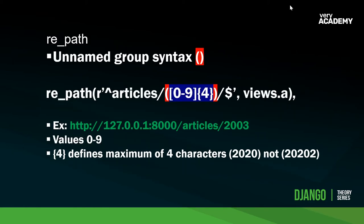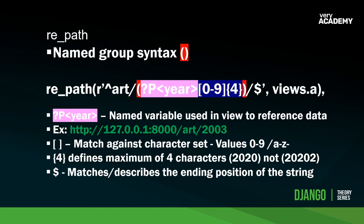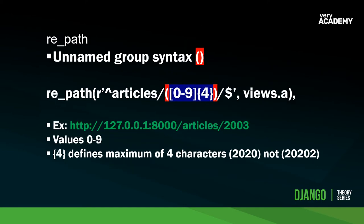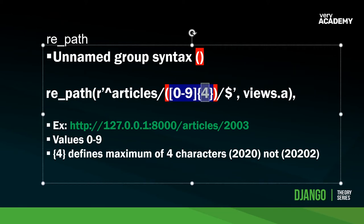Before we go to the code, I want to mention the unnamed group syntax, which is also in the Django documentation. With the named group syntax, when we pass a number to our view we reference it by the name 'year'. With unnamed group syntax, we simply don't have that name - the value is still passed but without a key. You may see this in some examples online. The character set zero to nine and the length limit of four are exactly the same.